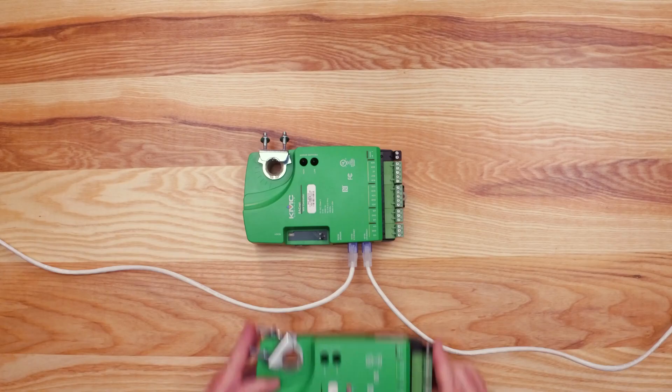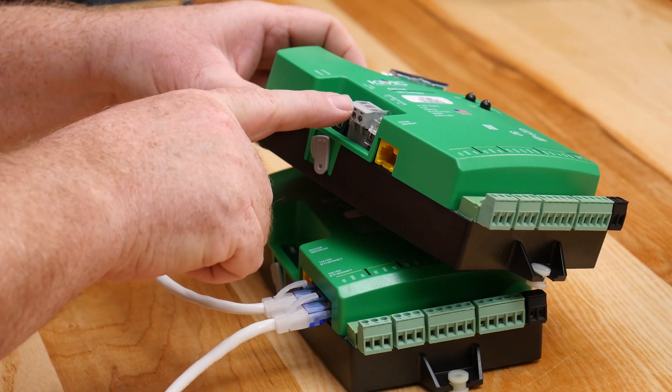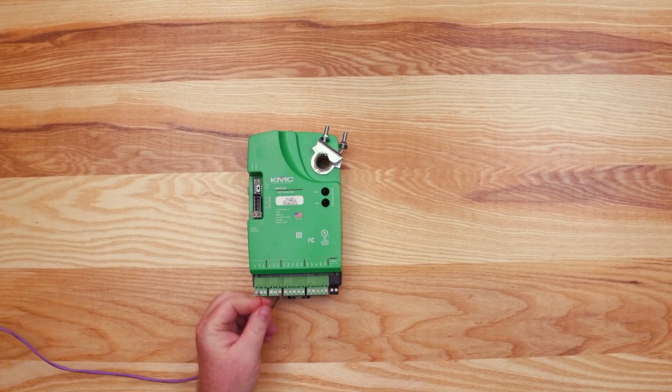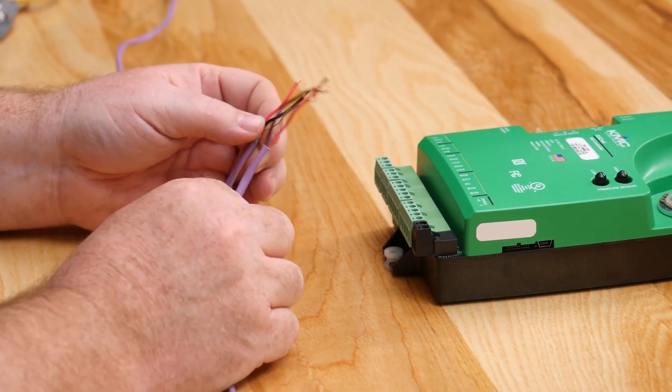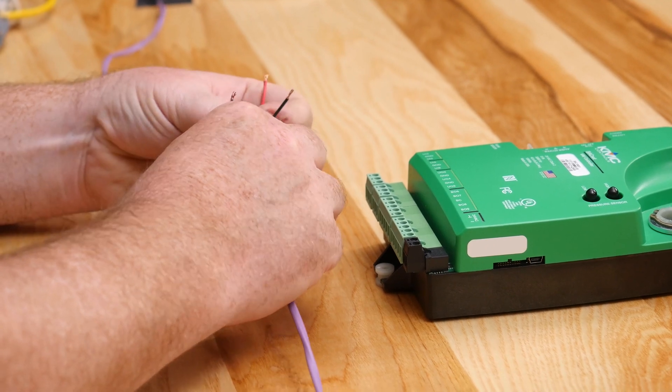We also offer a BACnet over MSTP version, where the two Ethernet ports are replaced with an MSTP terminal block. When wiring to a BACnet over MSTP network, you will have three wires. Make sure to use 18-gauge twisted shielded cable for your network.